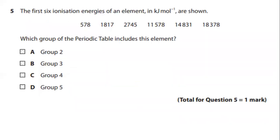The fifth question. The first six ionization energies of an element in kilojoules per mole are shown in these values. Now the question is which group of the periodic table includes this element? Let's see what is the clue you can get from these values.